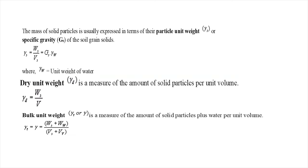The mass of solid particles is usually expressed in terms of particle unit weight or specific gravity of the soil grains. Gamma of solids equals weight of solids divided by volume of solids. Dry unit weight is a measure of the amount of solid particles per unit volume: gamma d equals weight of solids divided by total volume.